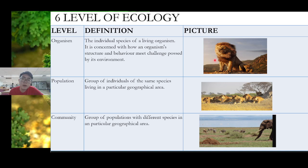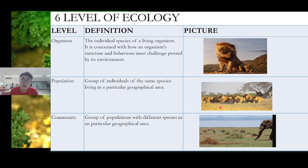The next, higher level is called population. Population is a group of individuals of the same species living in a particular geographical area — like a population of lions. All are the same species — lion only — that is considered one population.